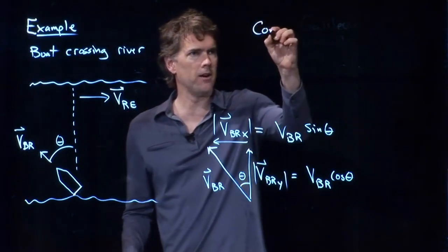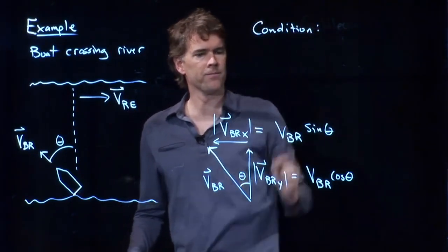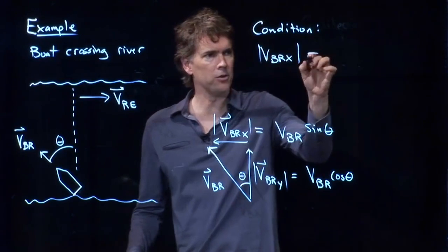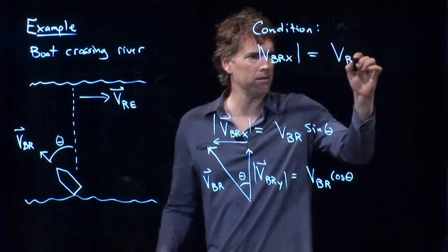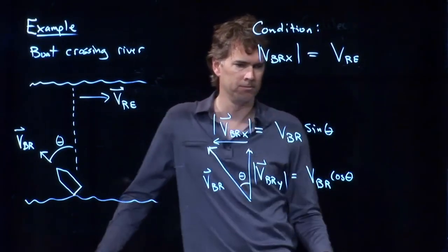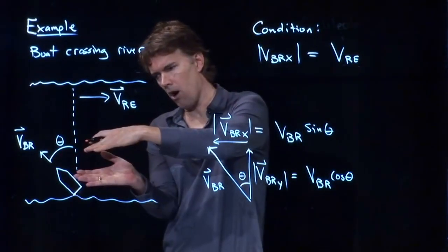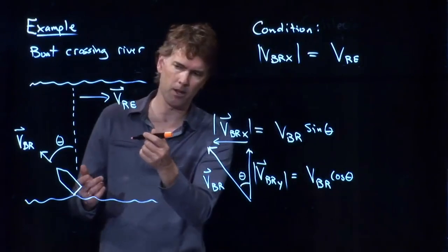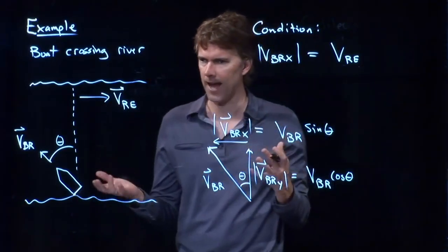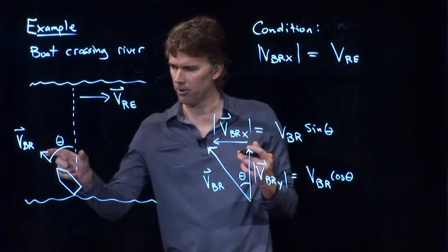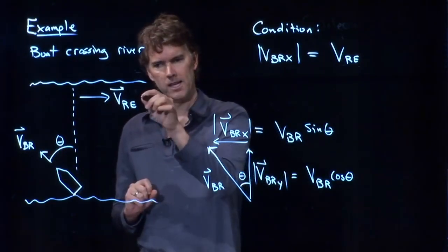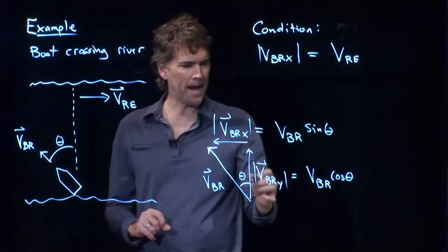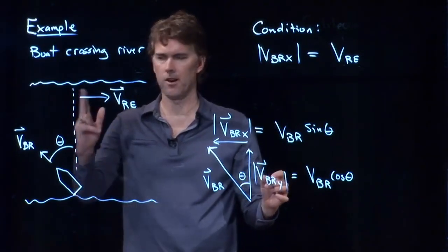And so our condition now is the following. VBR X has to equal the speed of the river going downstream. That makes sense, right? If I turn my boat all the way upstream such that I was going upstream at five kilometers per hour and the river is going downstream at five kilometers per hour, I wouldn't go anywhere, right? We would be exactly still. And so whatever component I have going upstream, as long as it equals the velocity of the river, the speed of the river, then any remaining vertical component is just going to carry me straight across the river.